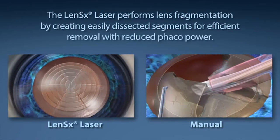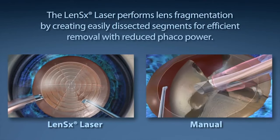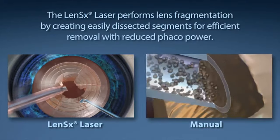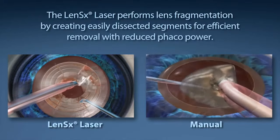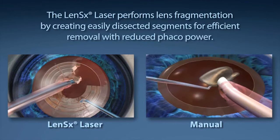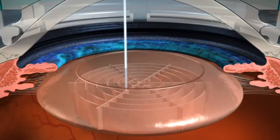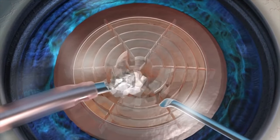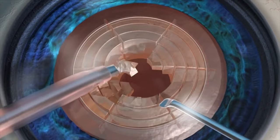Standard cataract surgery requires a phacoemulsification machine to segment and remove the content of the cataract. The goal of your surgeon is to reduce the amount of energy used to remove your cataract. The LensX laser performs lens fragmentation, creating easily dissected segments for efficient removal with little or no energy from the lens removal device.